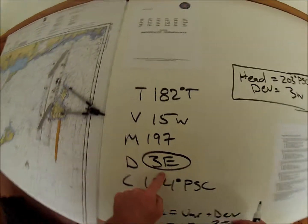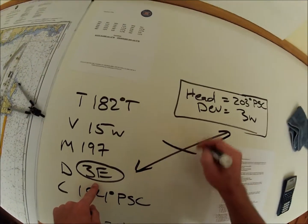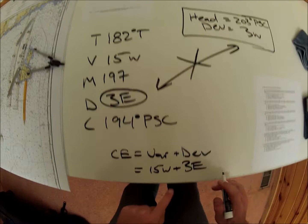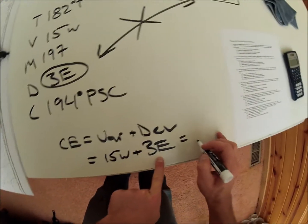Now look at this. 3 east, 3 west. Right? These do not check off. And our compass error is 15 west and 3 east is 12 west.